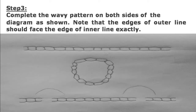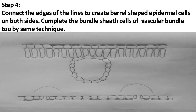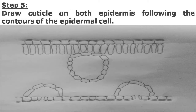Step three: make wavy cells in small boxes, and draw the vascular bundle also with wavy cells in small boxes. Step four: continue making the wavy cells to show the upper epidermis and lower epidermis clearly.